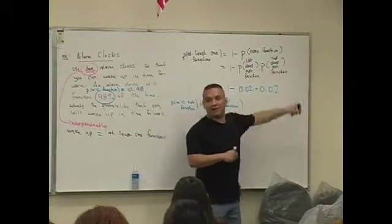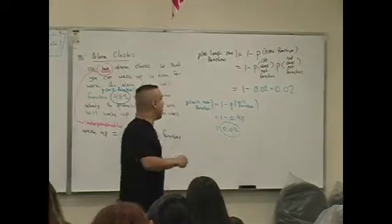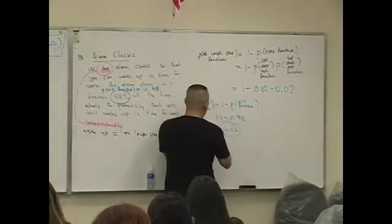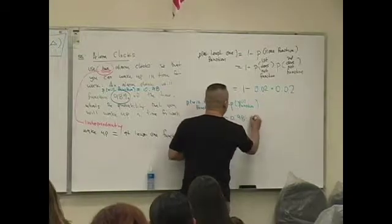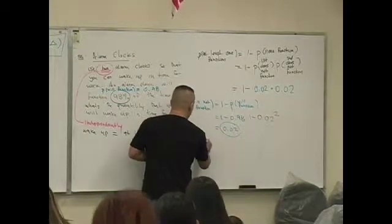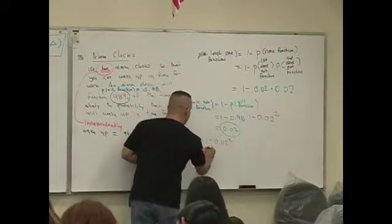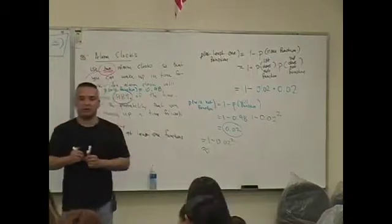So then now this reduces to this computation reduces to 1 minus 0.02 to the second power. What is 1 minus 0.02 to the second power, approximated to the thousandths position?